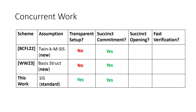Regarding succinctness: we all achieve succinct commitments (roughly polylog), but our openings are not as short as the other two works — our openings are linear in the length of the input and output. However, we are the only one of these works to achieve fast verification: in the other two works the verifier essentially has to run the function to verify the opening. For applications like verifiable FHE, forcing the verifier to run the whole function defeats the purpose of outsourcing. Achieving fast verification while getting succinct openings is a nice open question.